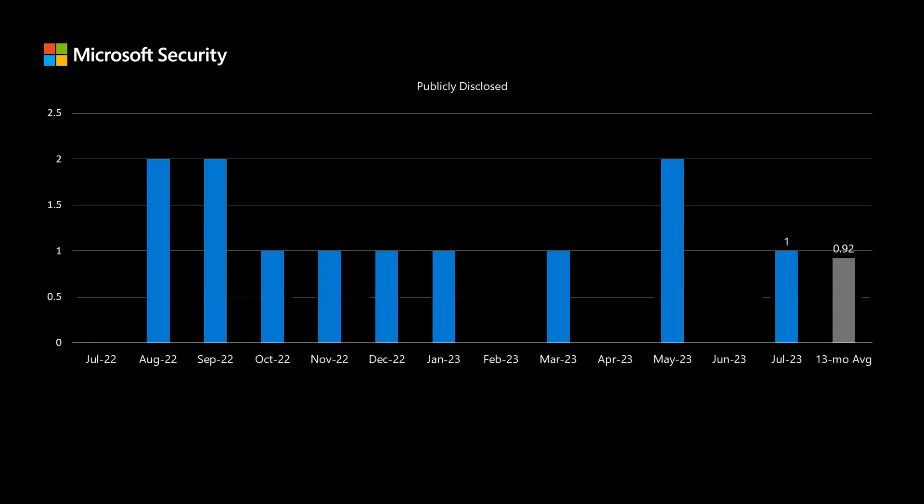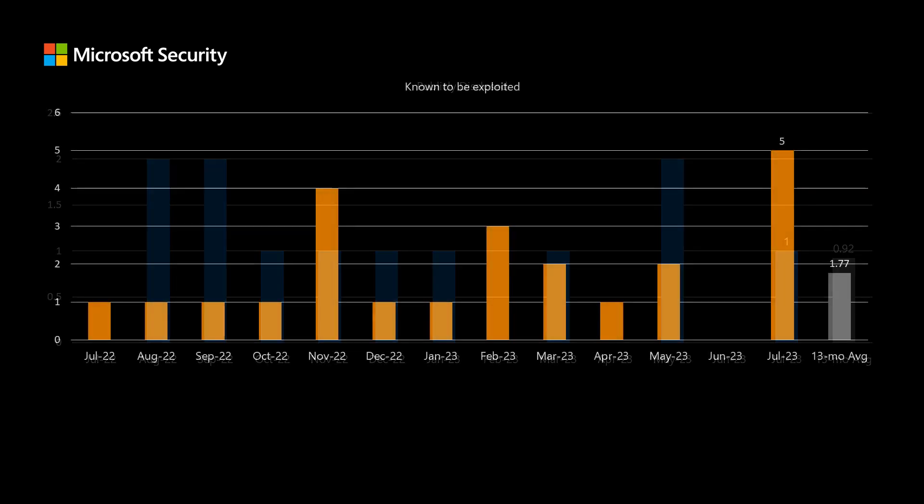Next, I'll talk about publicly disclosed vulnerabilities. This month we have one; we've been averaging just under one. Next, I'll talk about vulnerabilities that are known to be exploited out in the wild. We've been averaging right under two of these per month. This month, there are five CVEs that were known to be exploited at the time of release.